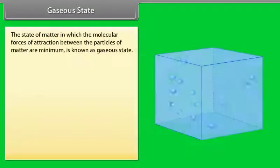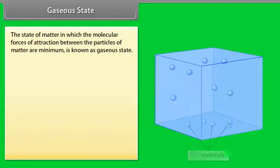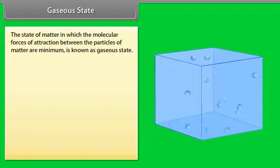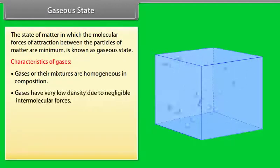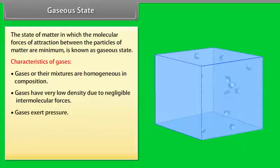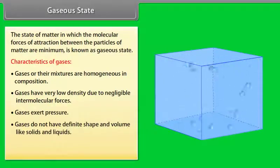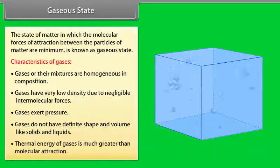Gaseous state: the state of matter in which the molecular forces of attraction between the particles of matter are minimum is known as the gaseous state. Gases completely fill the container that holds them. Characteristics of gases: gases and their mixtures are homogeneous in composition; gases have very low density due to negligible intermolecular forces; gases exert pressure; gases do not have definite shape and volume like solids and liquids; thermal energy of gases is much greater than molecular attraction.